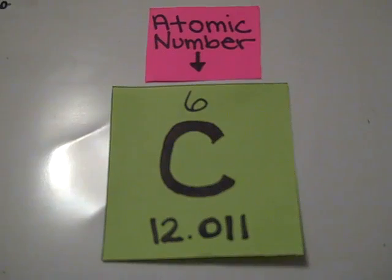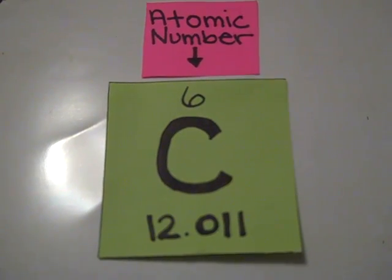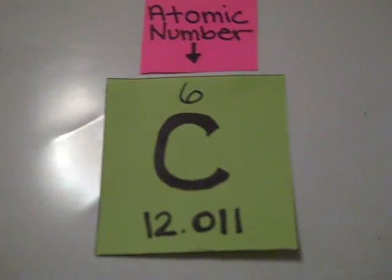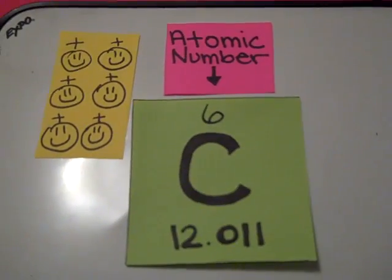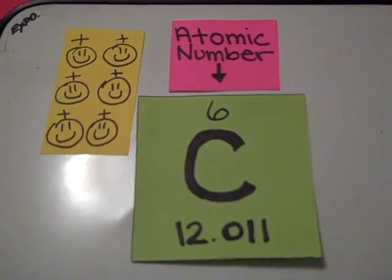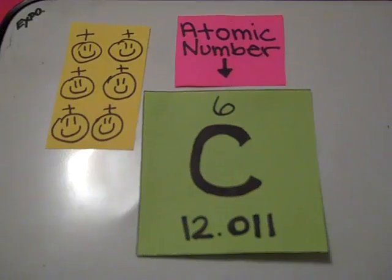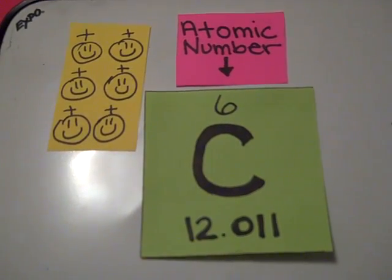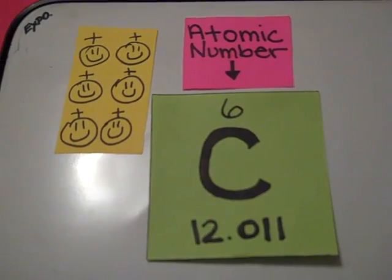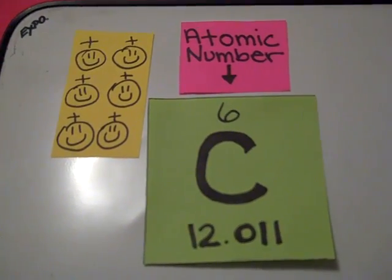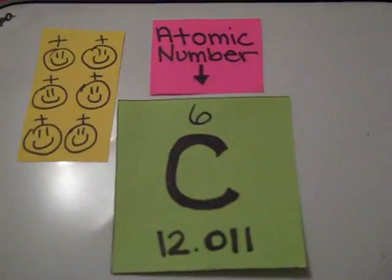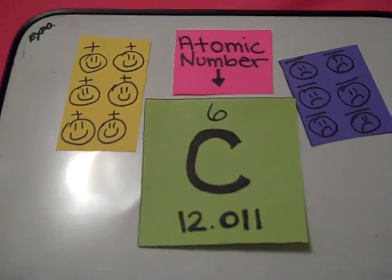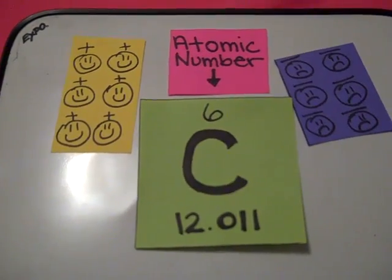The atomic number is the amount of protons in an atom of the element. Because the atomic number of carbon is six, there must be six protons in a carbon atom. Protons are positively charged particles. By definition, atoms have no overall electrical charge. This means there must be an equal amount of positively and negatively charged particles. Therefore, there must be six electrons to balance out the atom. Electrons are negatively charged particles.